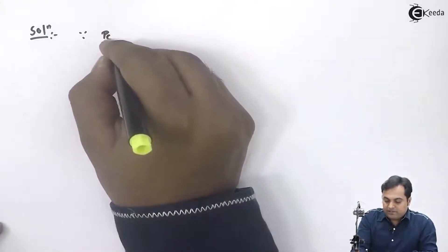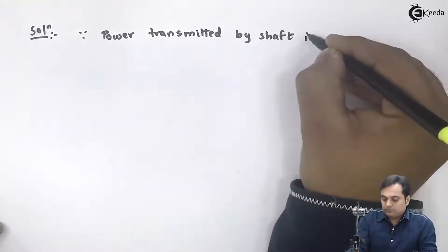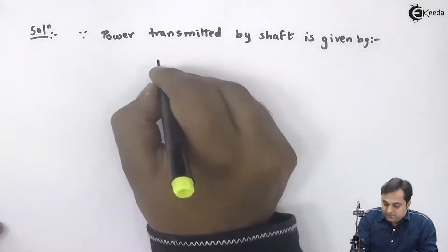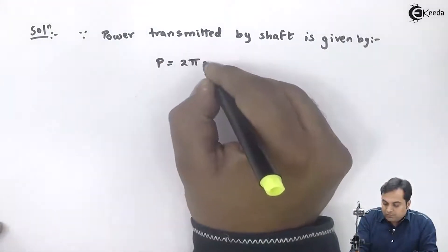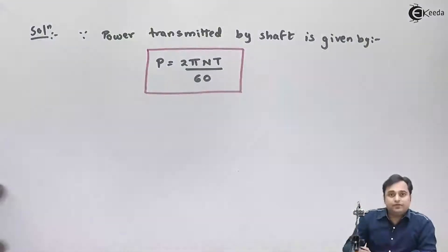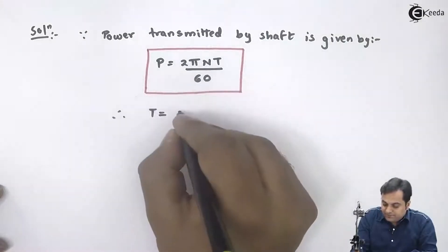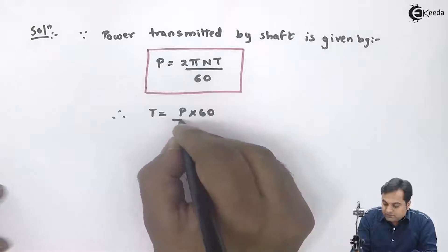Since power is given in this question, I will use the formula for power to first get the torque value. The power transmitted by a shaft is given by: P equals 2 pi N T divided by 60. Therefore, T equals P into 60 divided by 2 pi N.